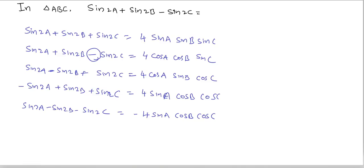So -sin2A - sin2B + sin2C — here angle A is minus and angle B is minus — equals -4cosA cosB sinC.